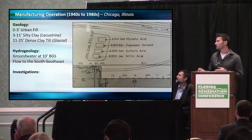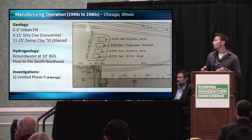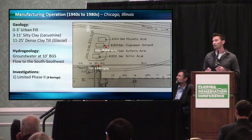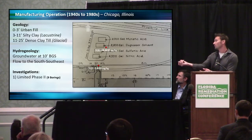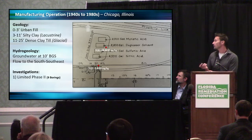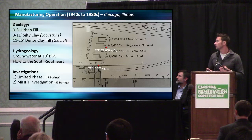The first investigation was a limited Phase II where we performed nine borings. We did a boring by that degreasing solvent tank and got a TCE concentration in the soil of 24,600 milligrams per kilogram — that soil sample was about 2.5% TCE. We also found a significant amount of TCE right next to the existing building, so we knew we needed to perform additional investigations.